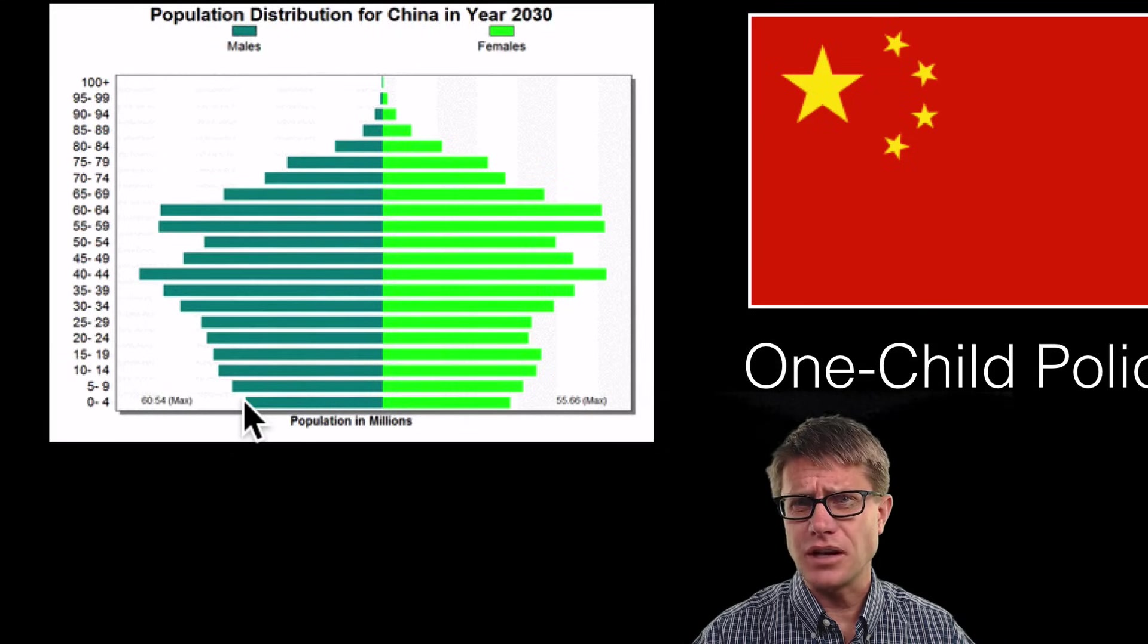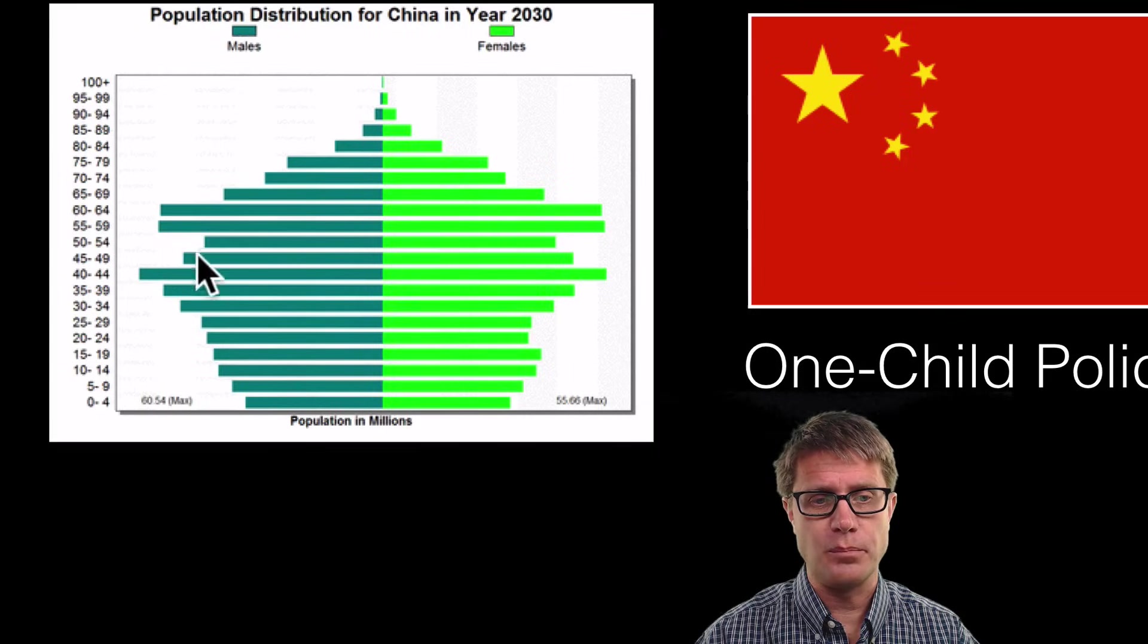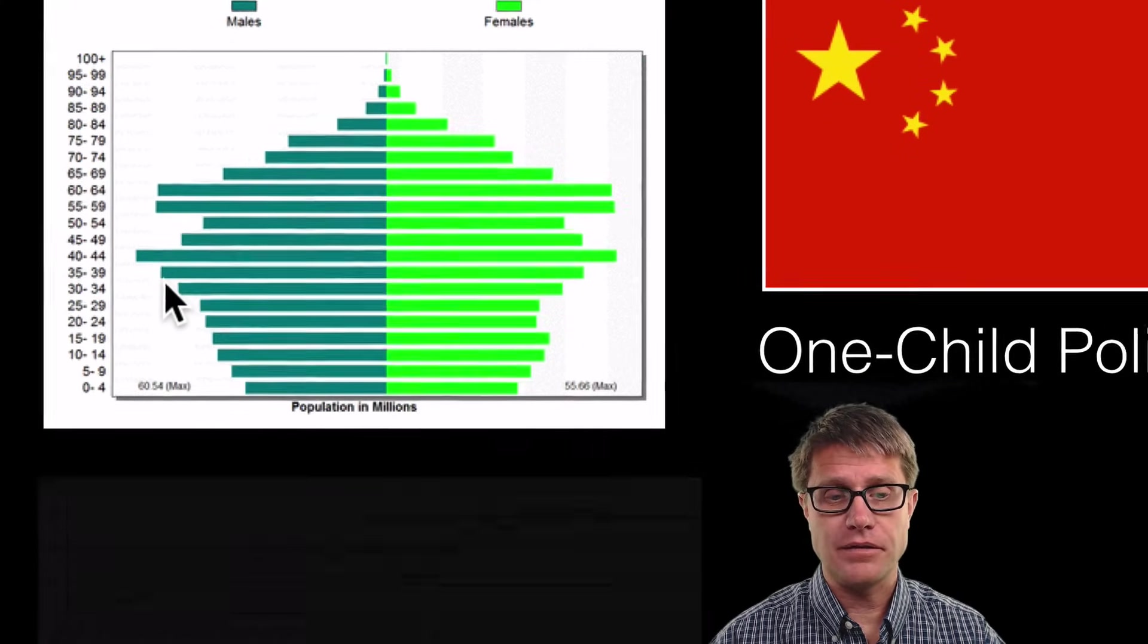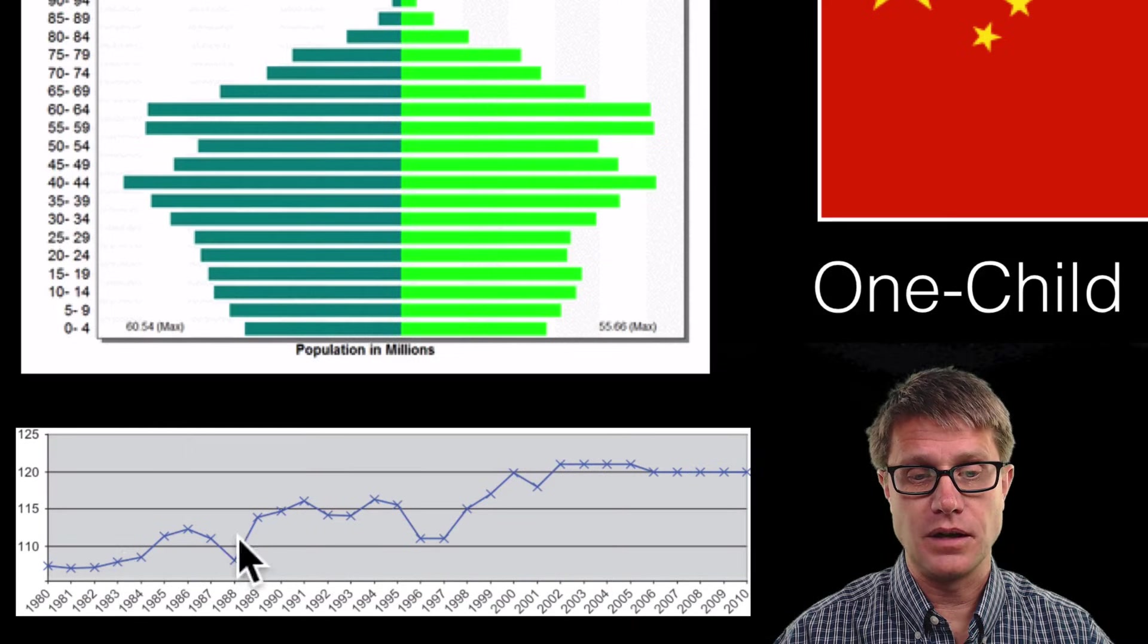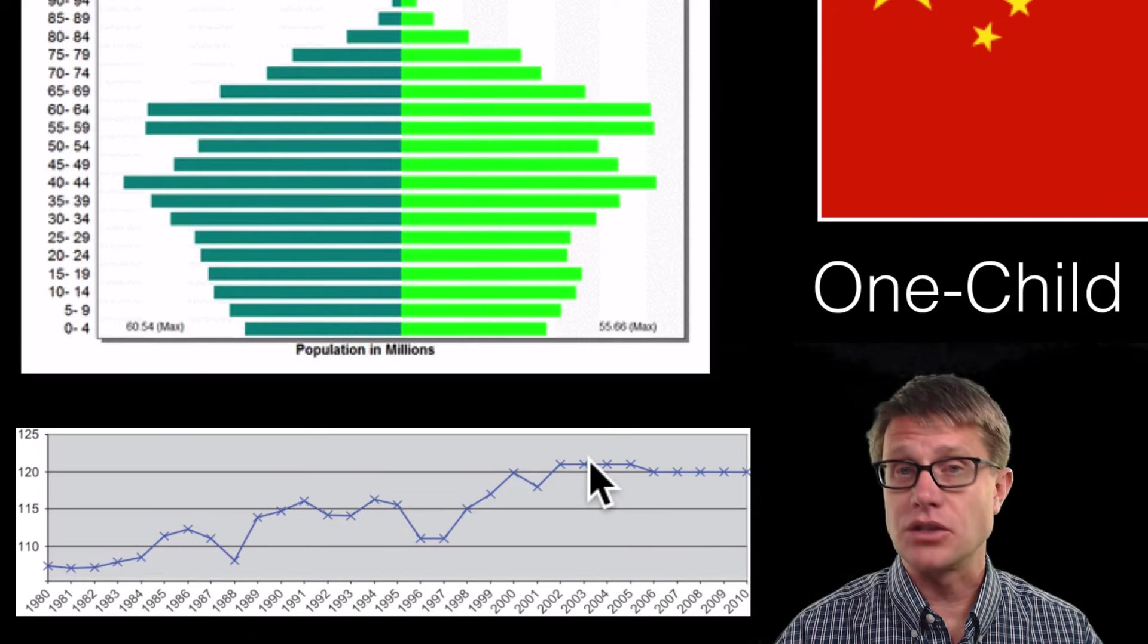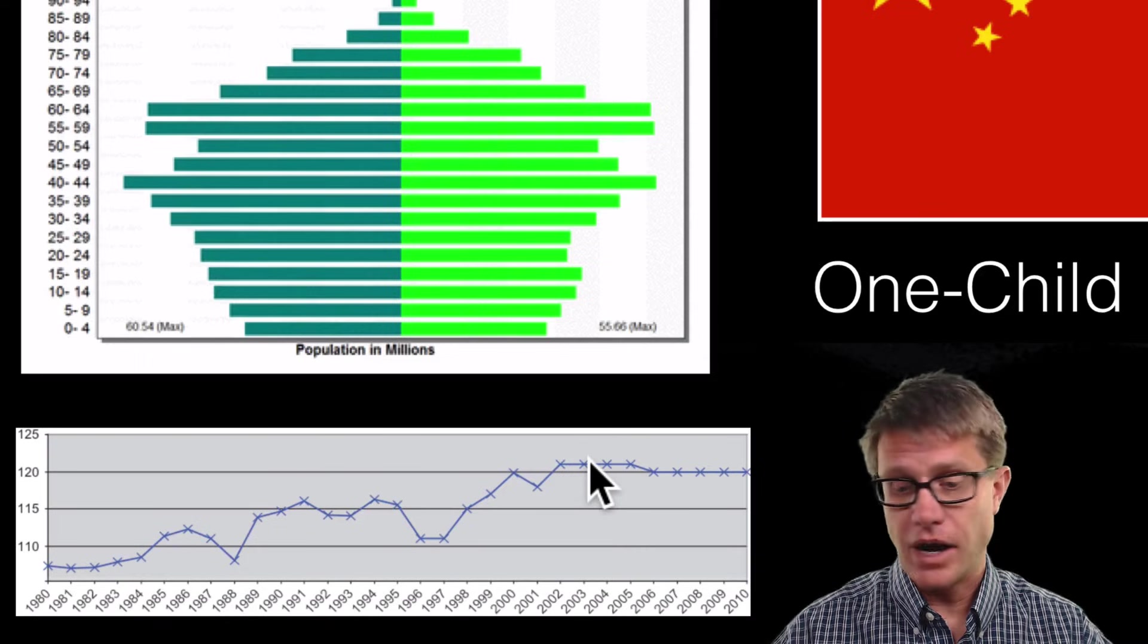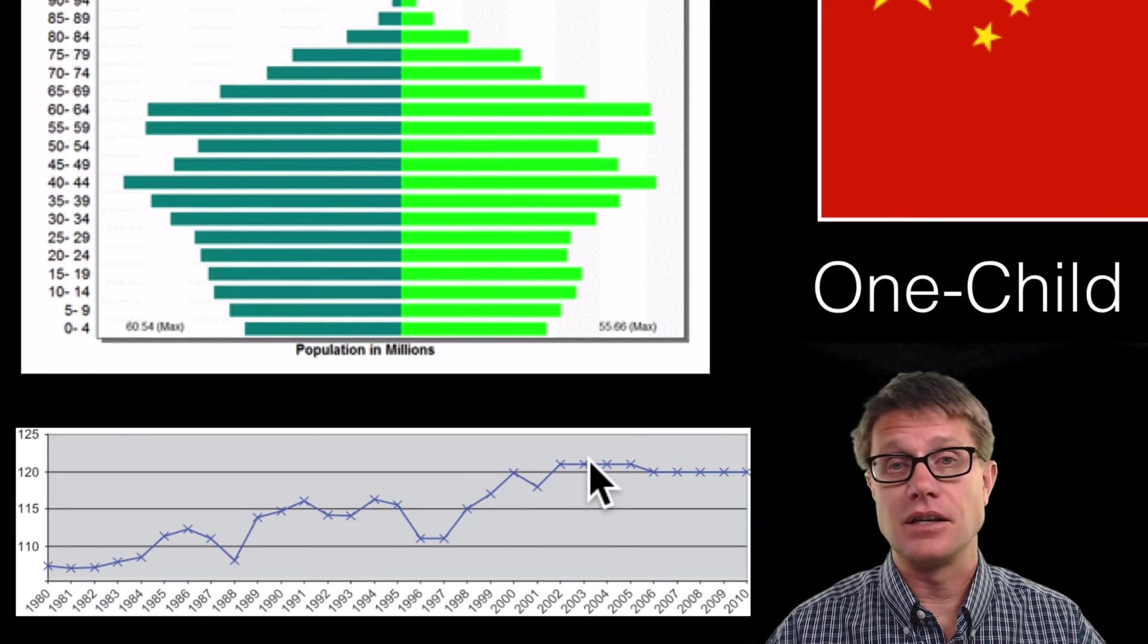And then you can start to see a more subtle thing here in the age structure diagram. I do not know if you can see this but there are more males than females. You can see it is shifting more to the left. And if we actually graph that, this is a graph that would show a hundred females. And this is what number of males that we are getting. So the number of males are increasing. And the reason why is that they see males as more valuable, especially in rural areas. Higher status and they can do more work. And so sometimes they are even abandoning those females.